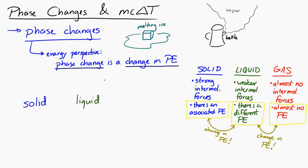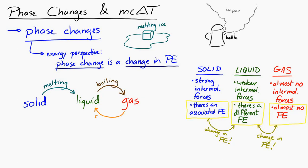A couple of terms we need to get out of the way: solid to a liquid is called melting; liquid to a gas is called boiling; gas to a liquid is called condensation; and liquid to a solid is called freezing.